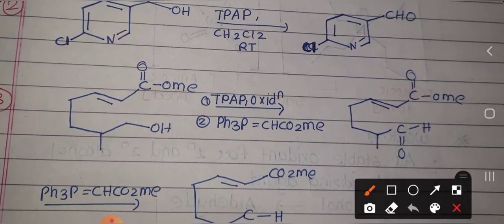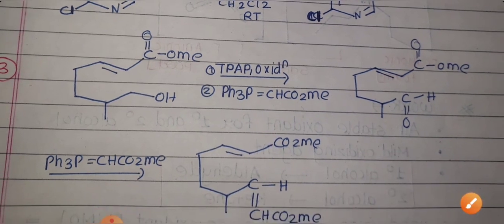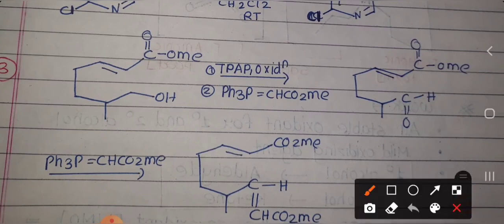This next example is quite interesting — here two steps are involved, one named reaction and one reagent. As I mentioned, this reagent is often asked in multi-step reactions. In the first step, TPAP is given; there is an ester present but TPAP has no role in oxidizing esters, so only the primary alcoholic group is converted to the aldehyde. In the second step, a Wittig reaction occurs — the PPh₃ group and oxygen are removed and the new group is attached, giving the final product.